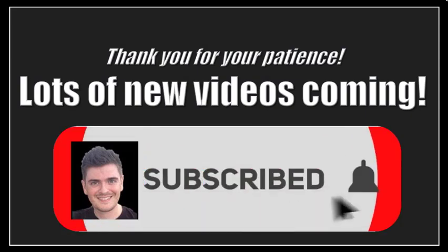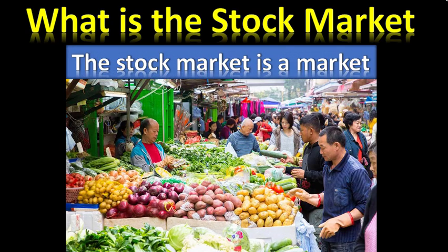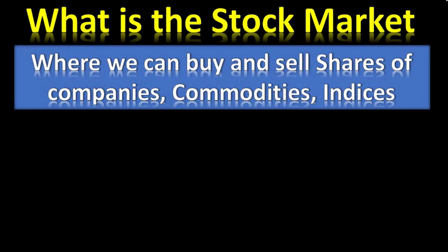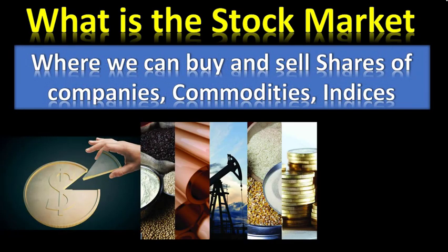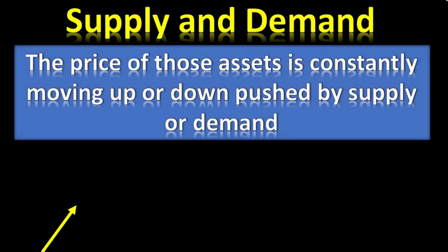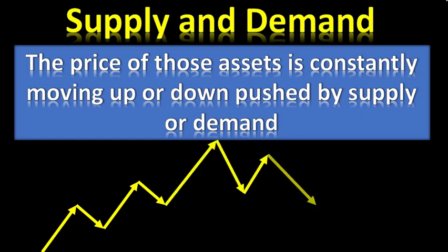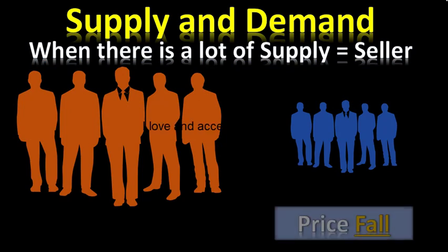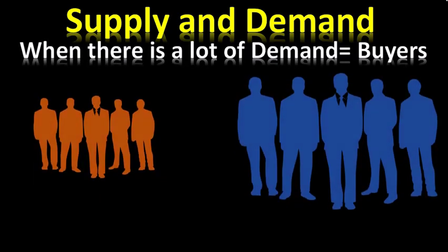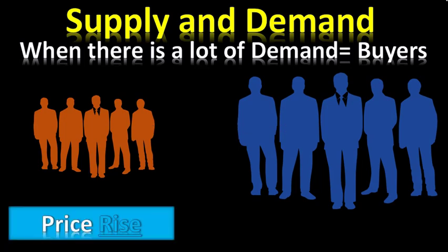What is the stock market? The stock market is a market like the one where you buy vegetables and fruits, but this is a market where we can sell and buy shares of companies, commodities, or indices. Supply and demand: the price of those assets is constantly moving up or down, pushed by supply and demand. When there is a lot of supply — sellers — the price will fall because there are not enough buyers to meet the price. When there is a lot of demand — buyers — and not enough sellers, then the price will rise to meet the demand.